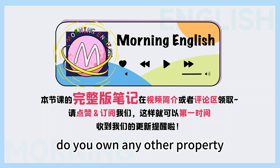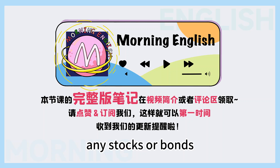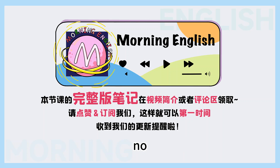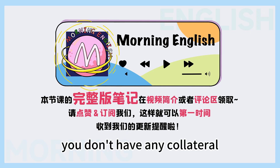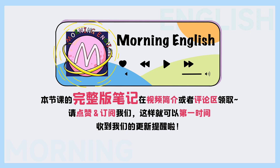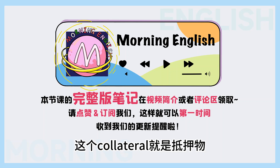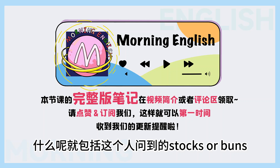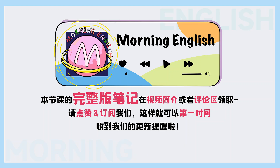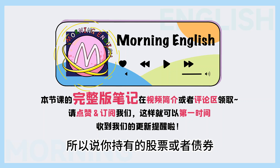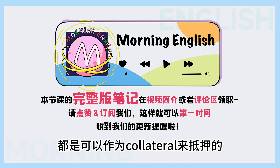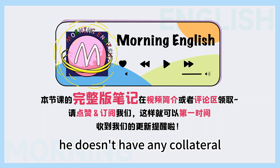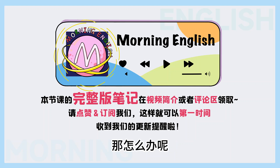那来听录音。Do you own any other property? Any stocks or bonds? No. Let's see. You don't have any collateral. 这个collateral就是抵押物、担保品的意思。那这个抵押品可以是什么呢？就包括这个人问到的stocks or bonds，这个stock是指股票，bond是债券。所以说你持有的股票或者债券，都是可以作为collateral来抵押的。那像我们录音里的这个人，he doesn't have any collateral，他没有抵押物，那怎么办呢？